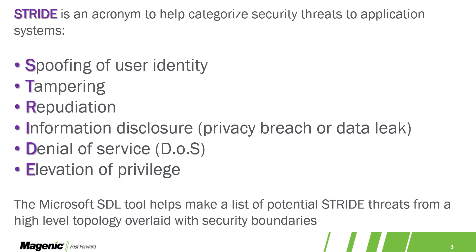Information disclosure — these are the ones you read about most on the Internet. When you read about XYZ Corp having a security incident and inadvertently 2 million credit cards or usernames and passwords or social security numbers were leaked. Information disclosure, while it is one of the most newsworthy because it's the easiest for readers to understand, generally comes as the result of one of these other threat vectors.